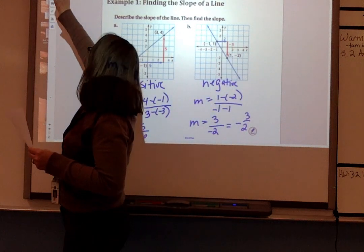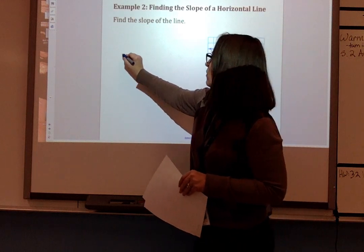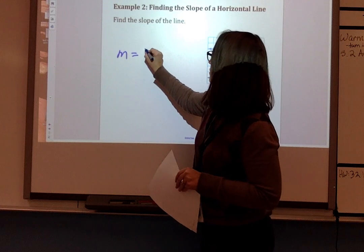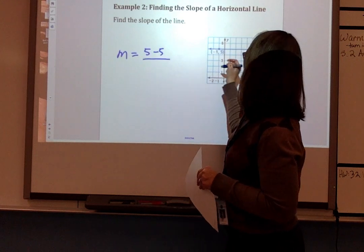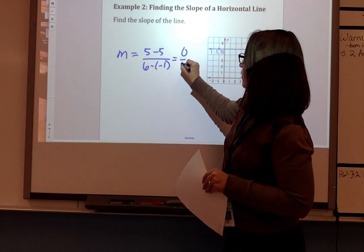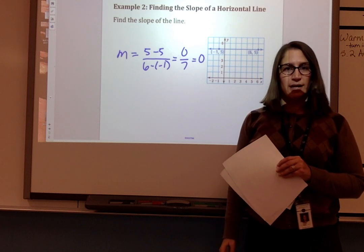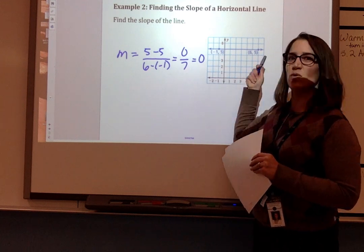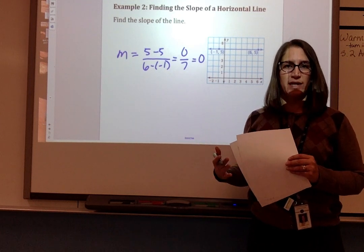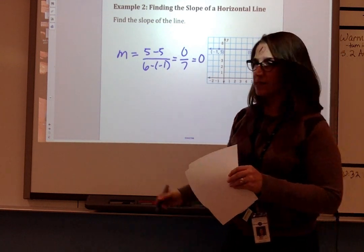Let's look at some special situations. A horizontal line. So we're going to find the slope. I'm going to do 5 minus 5 over 6 minus negative 1. That gives me 0 over 7, which is 0. You're going to find that the slope of any horizontal line is 0 because the change in y is 0. They have the same y value, so y2 minus y1 is always 0, which means our numerator is 0 and our slope is 0.